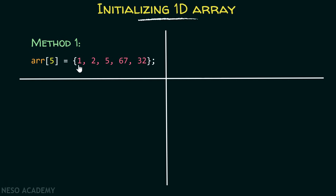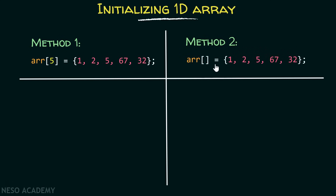This element will go in index zero, this element in index one, this element in index two, and so on. Now method number two is considered to be better in comparison with method one. Here there is no need to specify the length — both are exactly the same, but you can write it without specifying the length. The advantage is that you can add as many elements as you want, which makes it much better.